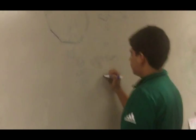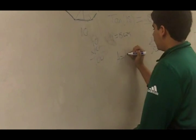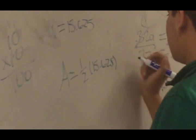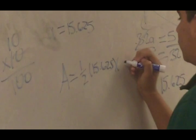And I plug that into my equation: A equals one half times a, which is the apothem, times the perimeter.